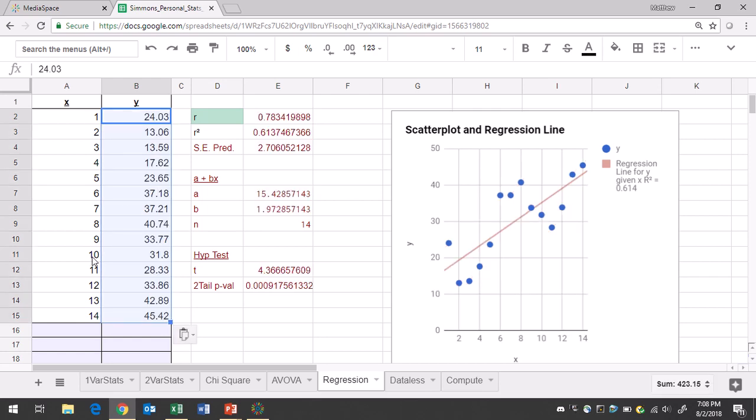So all of my data is now in Google Sheets. The only thing you need out of here for now would be the p-value, 0.0009.